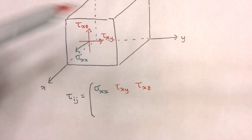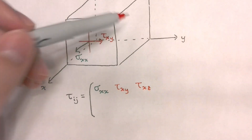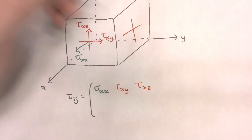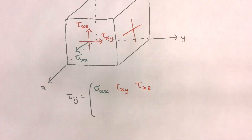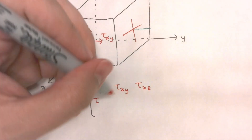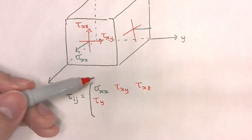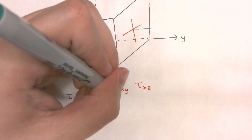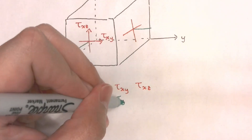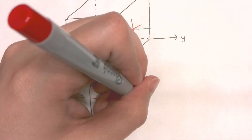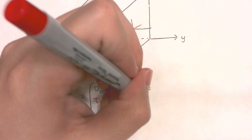Looking at the y-face, we would have a shear component in the x-direction, a shear component in the z-direction, and a normal component in the y-direction. So we can write our components as: shear component in the y-face acting in the x-direction, normal component in the y-face acting in the y-direction, and shear component in the y-face acting in the z-direction.